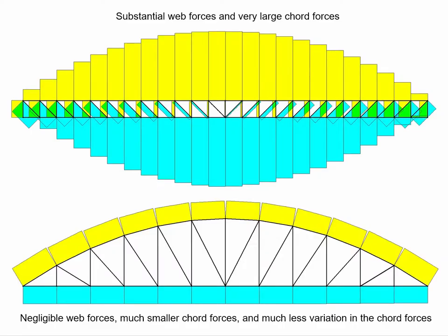This image shows the variation in the axial forces for the parallel cord truss and the bow truss. The web forces for the parallel cord truss are substantial and the cord forces are very large. You'll notice the web forces here at the end, even though they're nowhere near as large as the cord forces, are pretty substantial. These cord forces, compared to anything else in this simulation, are enormous.